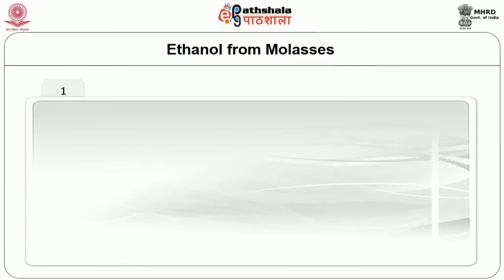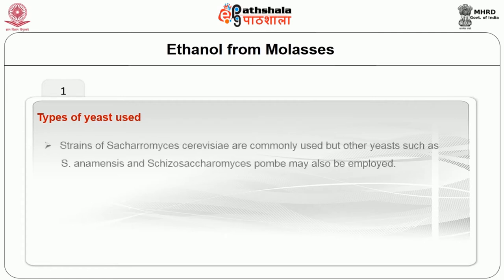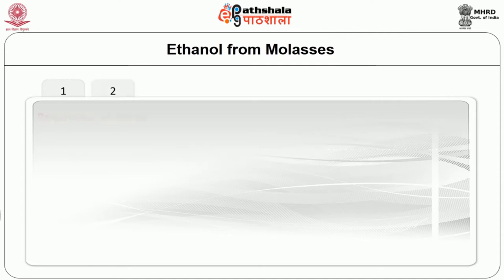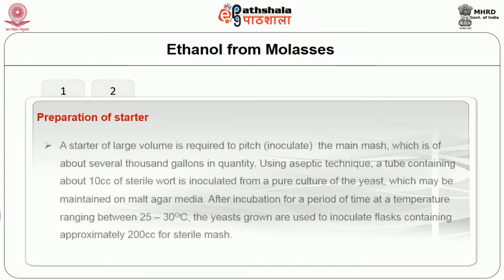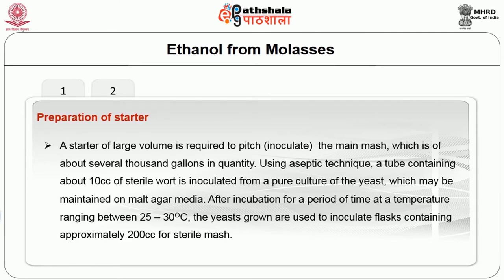The detailed process is as follows. The first step depends on the types of yeast used; strains of Saccharomyces cerevisiae are commonly used but other yeast species may also be employed. The second step is the preparation of starter. A starter of large volume is required to pitch the main mash, which is of about several thousand gallons in quantity. Using aseptic technique, a tube containing about 10 cc of sterile wort is inoculated from a pure culture of yeast, which may be maintained on malt agar media.